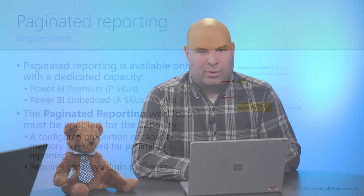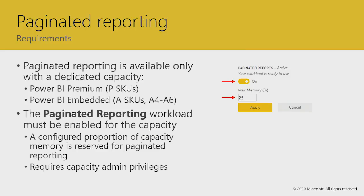The requirements for paginated reports: you need to have a premium capacity or a capacity purchased through Azure in an A SKU. If you buy a Power BI Premium capacity, it would be P1, P2, or P3. If you're buying the capacity in Azure, you need a minimum of A4, also supported in A5 or A6. You'll see additional ways to enable paginated reports in different SKUs going forward, but today we're focusing on premium or embedded. You need to ensure the workload is enabled for the capacity — it won't use memory until you upload a paginated report for the first time, so report authors don't need to coordinate with the capacity admin. They can just start using it when needed, and that's when memory will be consumed.